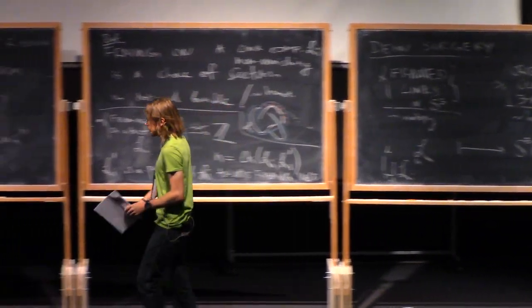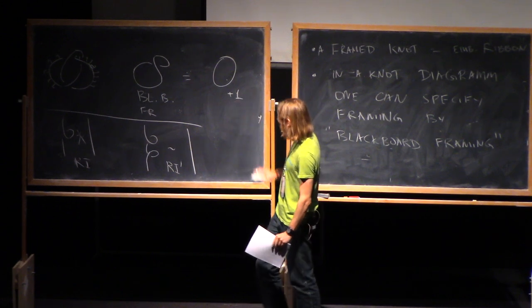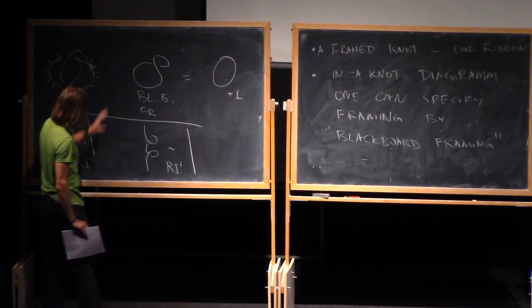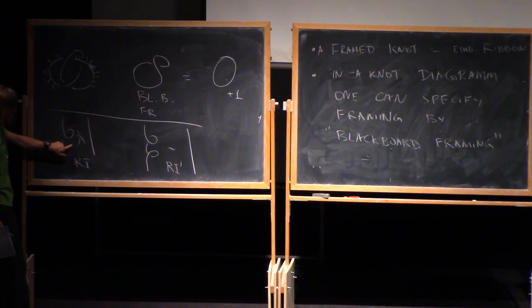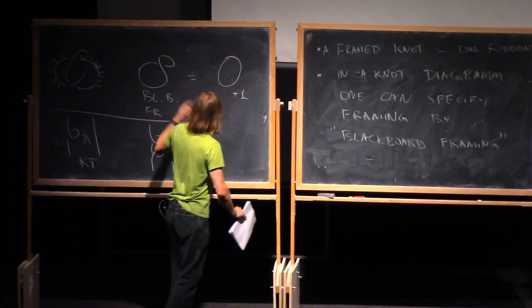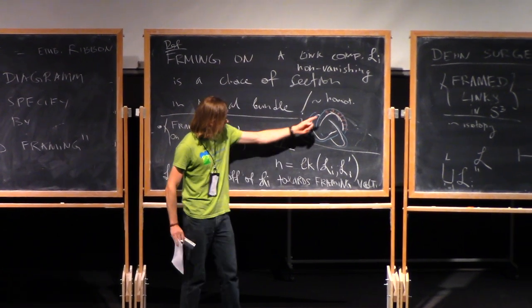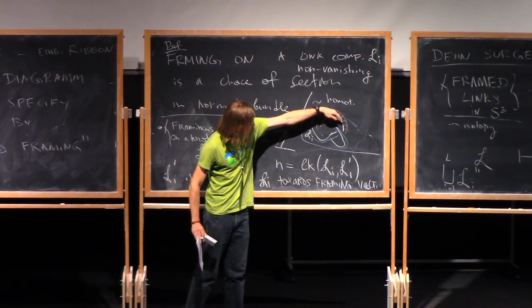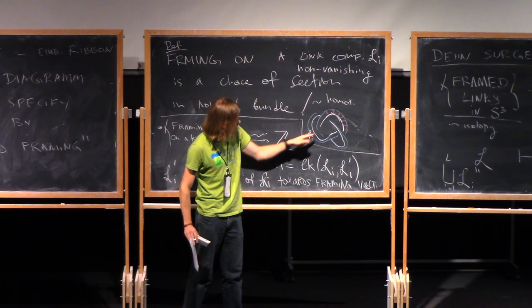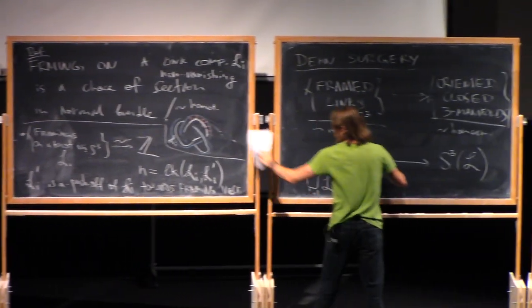So to summarize, to specify framing, either for each link component we specify an integer number, or in terms of plane diagram, we draw it in a certain way so that we are not allowed to do the first Reidemeister move. Essentially, morally, this integer number is how many times this framing vector winds along the link component once we go around.